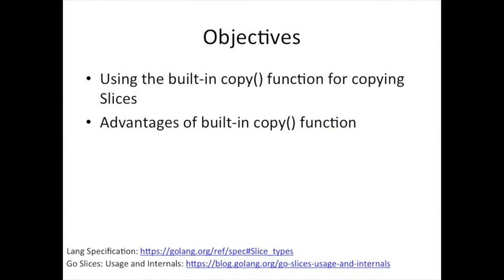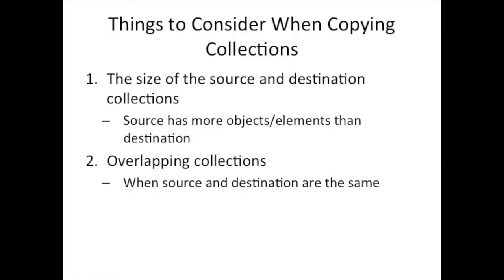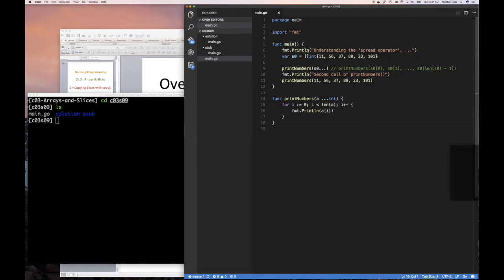Previously, you saw the make function, the length function, the capacity function, and then we did the append function. So this is the copy function. The nice thing about the copy function is it helps you take care of all those tricky situations you might have in other languages where you're trying to copy one slice to another and they have different sizes, or they might even overlap in which they point to the same underlying array. Those things are things you have to take care of — or at least be cognizant of — in other languages. And so today we're looking at copying slices using the built-in copy function.